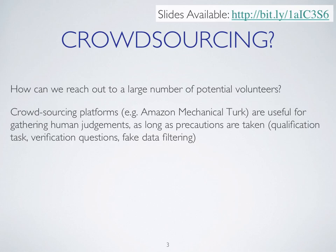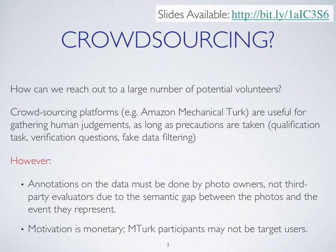One answer that the community has come up with is to use crowdsourcing — soliciting volunteers on an internet scale using platforms like Amazon Mechanical Turk. These are useful platforms for generating human judgments as long as precautions are taken, such as qualification tasks or verification questions, because many workers are in it for the money and may not do a good job. However, there's a big problem: annotations on the data must be done by the photo owners themselves, not third-party evaluators, because personal photographs are inherently personal and there is a semantic gap between the photos and what they represent to the individual.